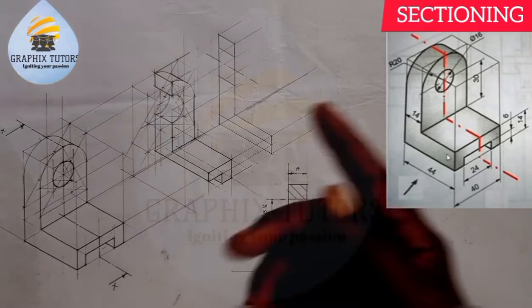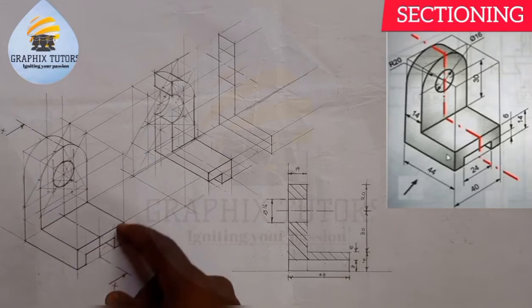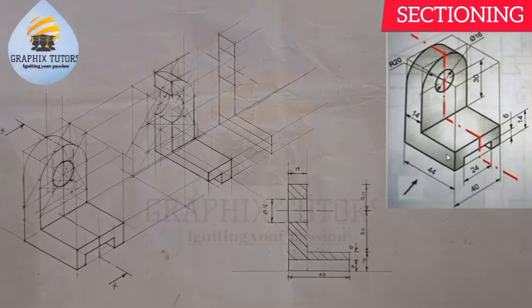I have to reproduce the figure that is displayed at the right hand side of the screen on my drawing sheet. Now we'll talk about sectioning. It means removing a part, a section of a figure from the parent material.